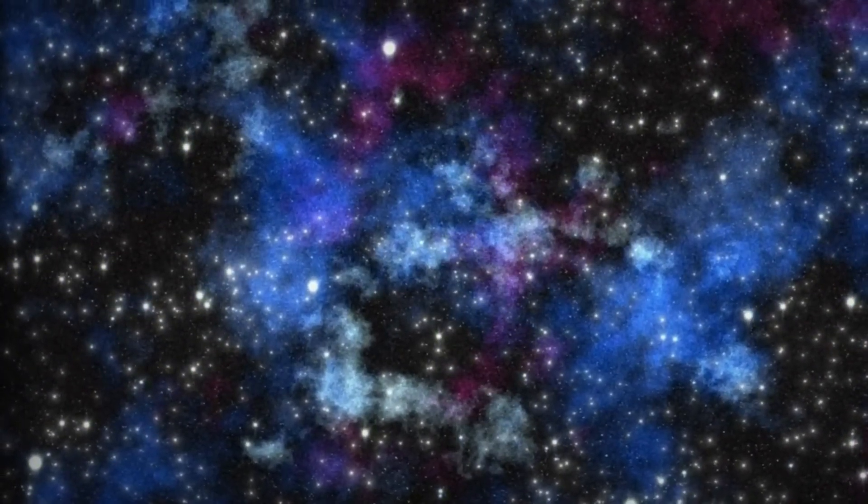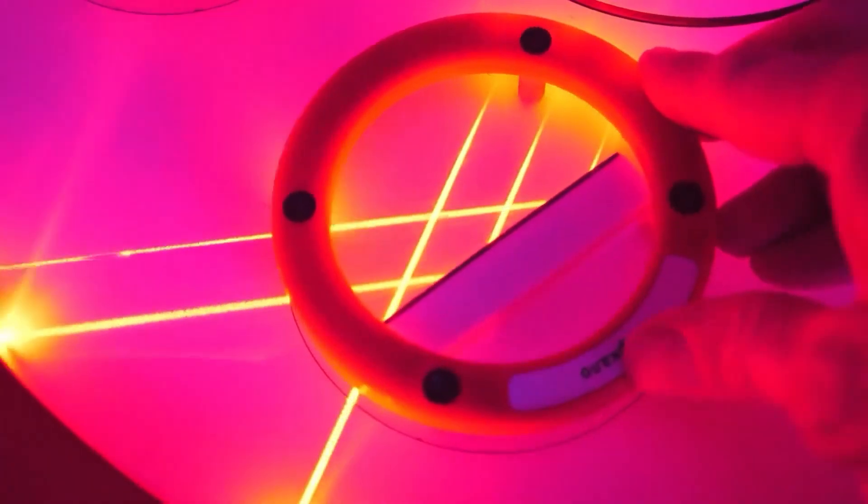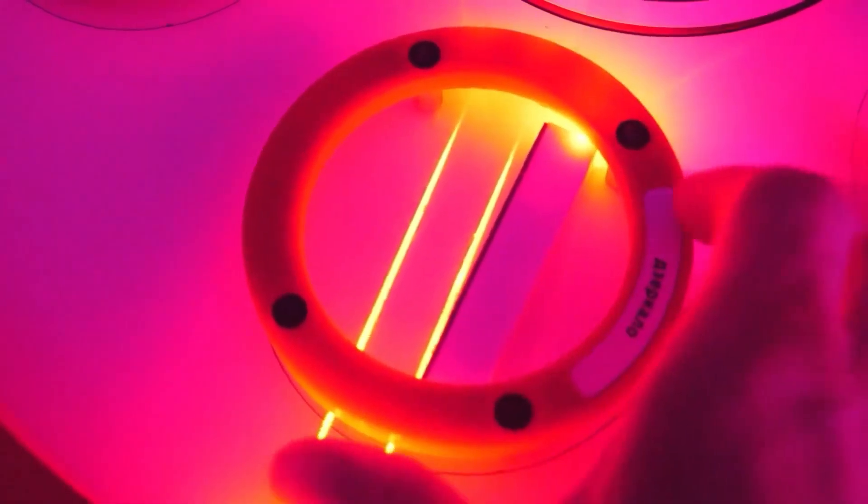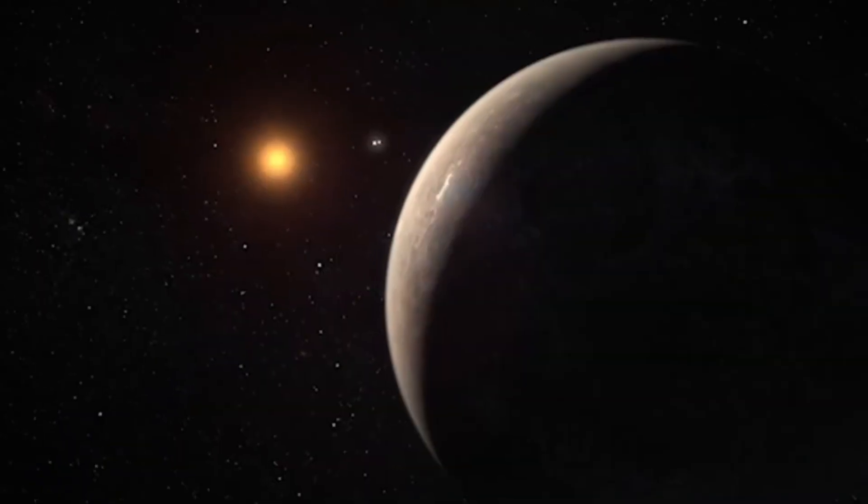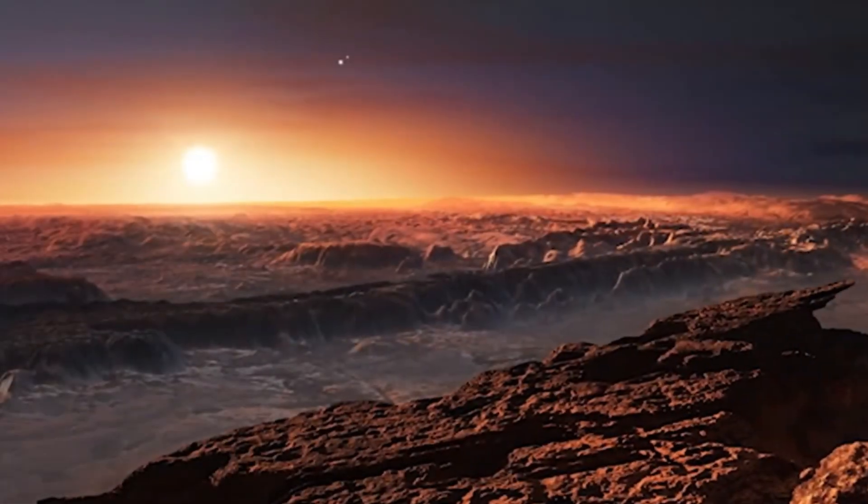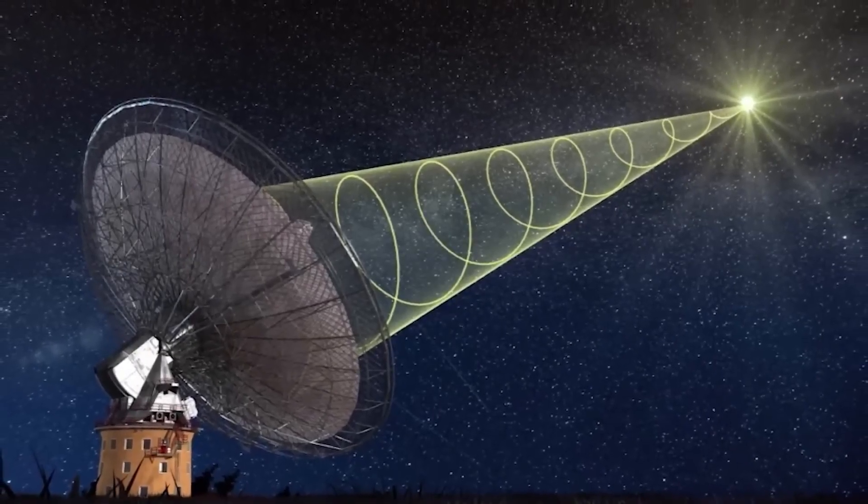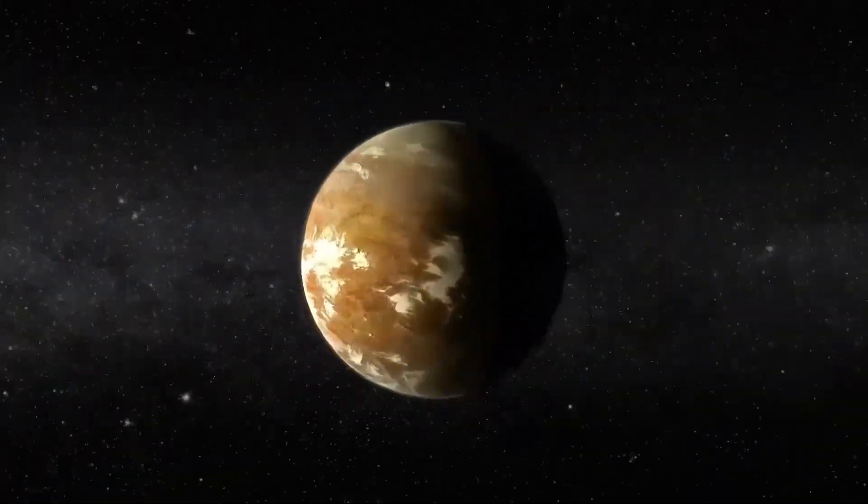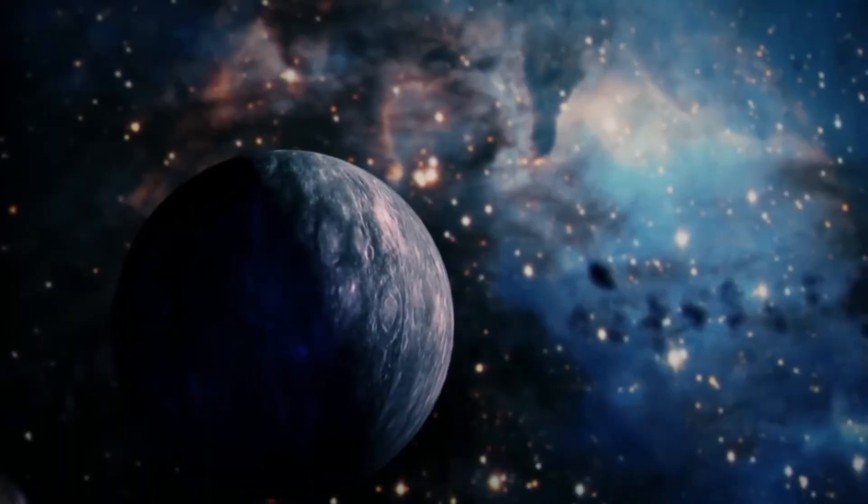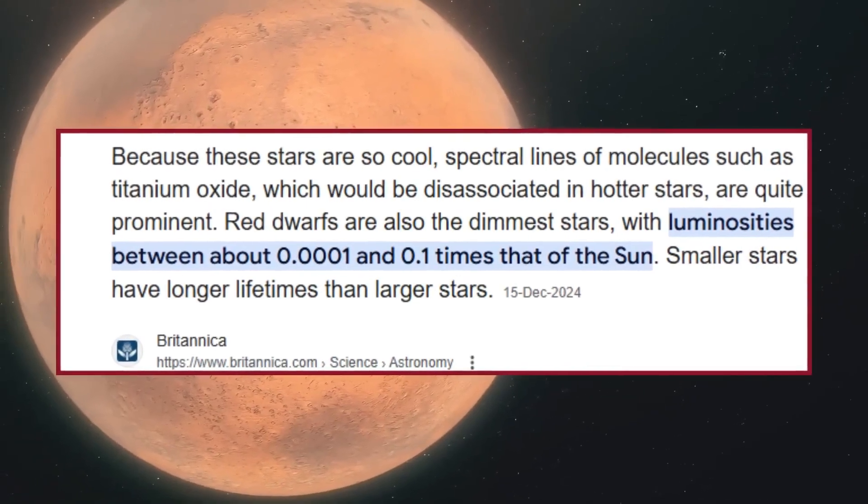To understand why Proxima b is so important, it's essential to examine the star system it belongs to. Proxima b orbits Proxima Centauri, the closest known star to our sun. Proxima Centauri is a red dwarf star located approximately 4.24 light-years away from Earth in the constellation of Centaurus. Even though Proxima Centauri is the closest star to us, it's not visible to the naked eye due to its faintness. However, its proximity has made it a subject of intense interest in astronomy. Proxima Centauri is part of a triple star system alongside Alpha Centauri A and Alpha Centauri B.